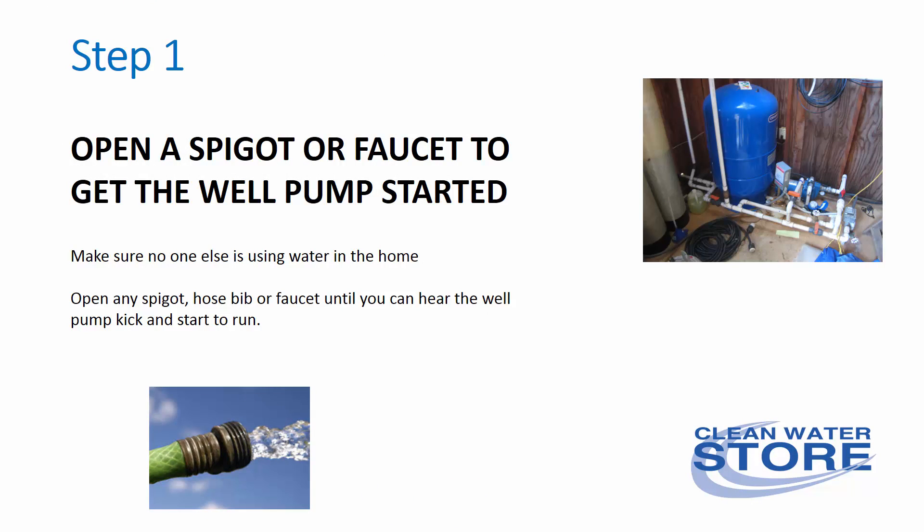Step one: open a spigot or faucet to get the well pump started. Make sure no one else is using water in the house. Open any spigot, hose bib, or faucet until you can hear the well pump kick in and start to run. Some folks say they can't hear their well pump running, but you can usually hear the pressure switch click, or you can hear the water running.